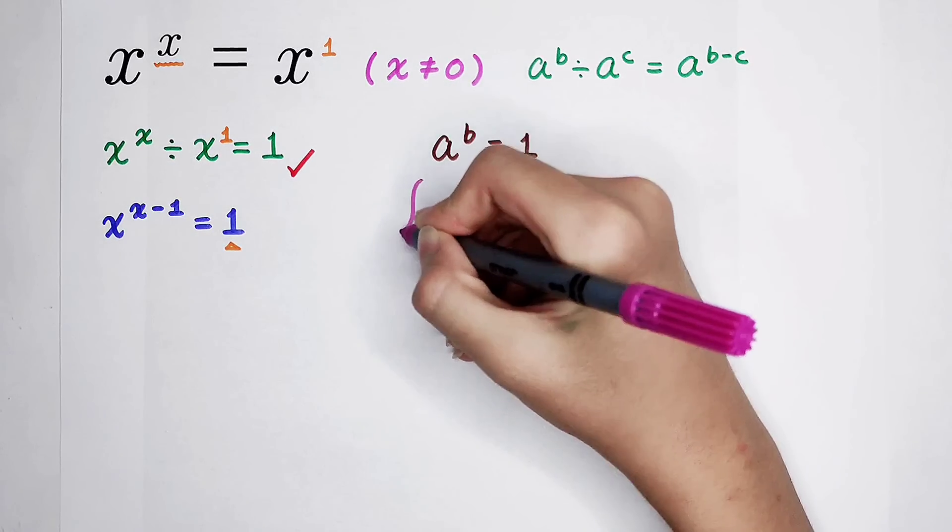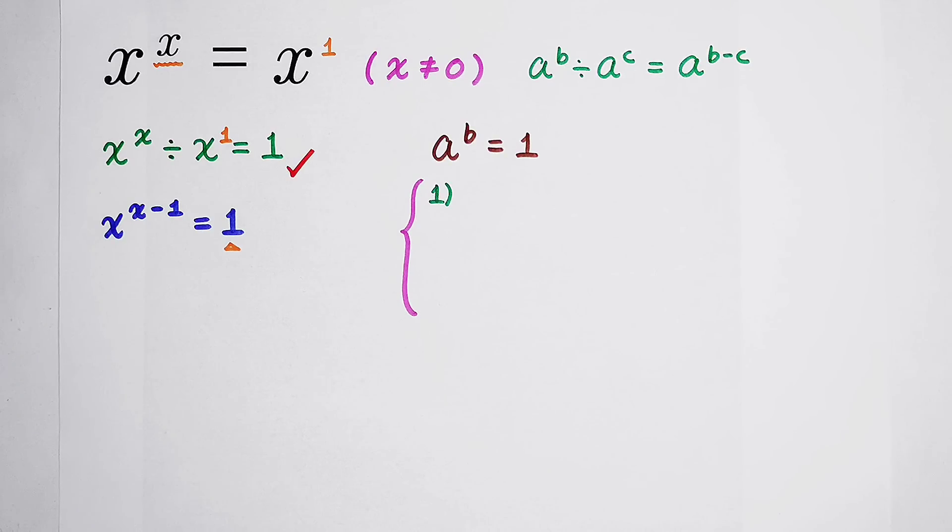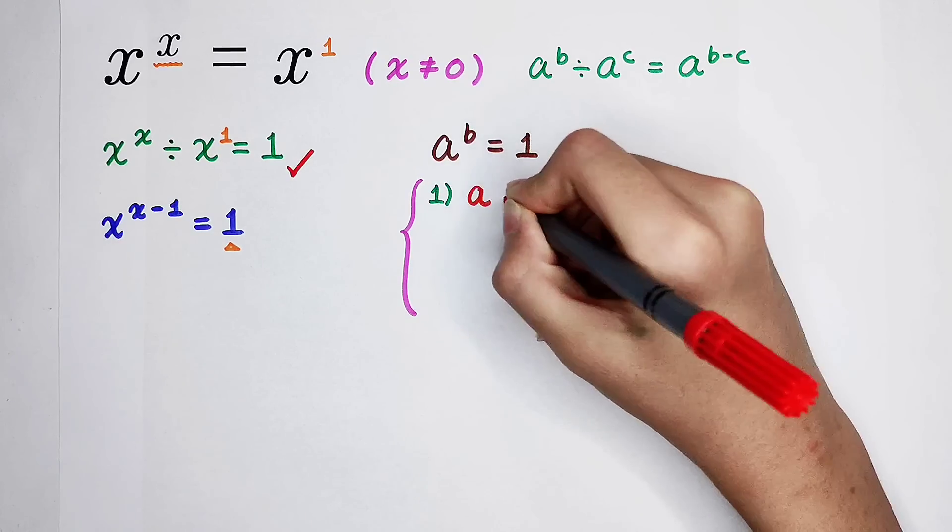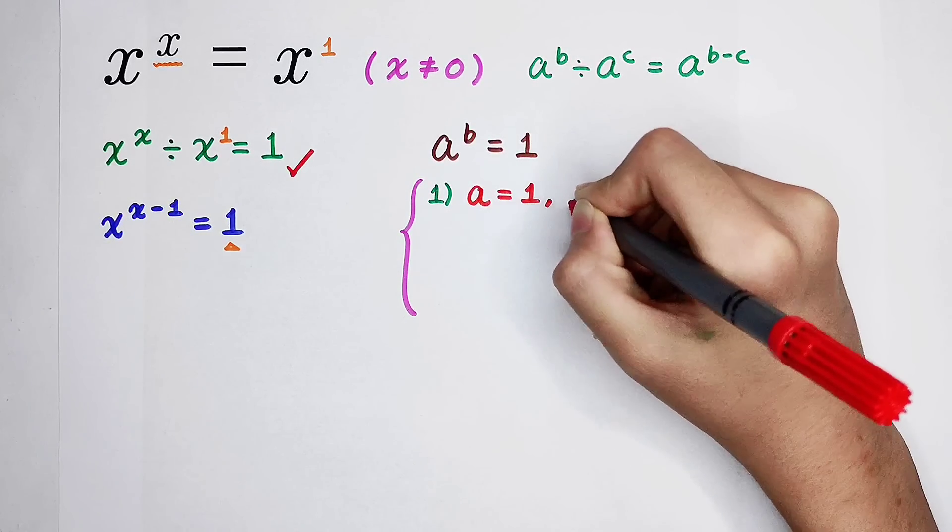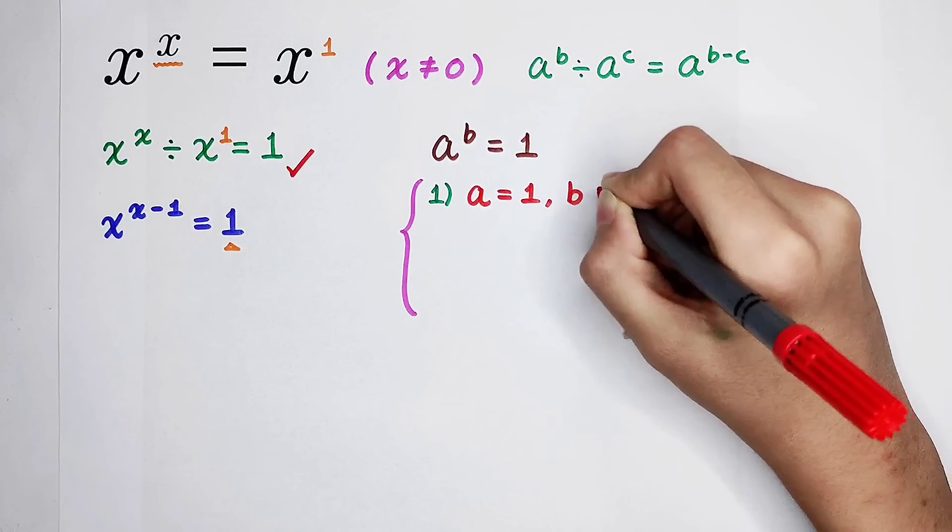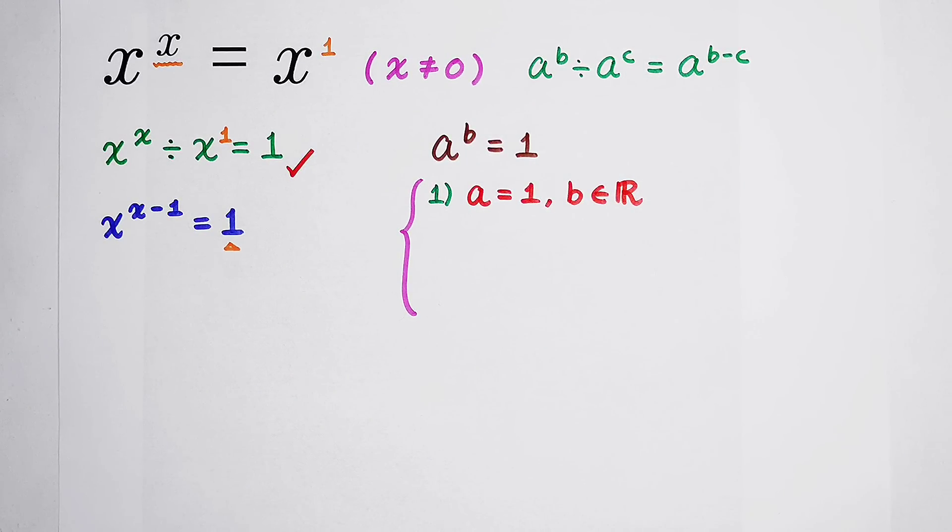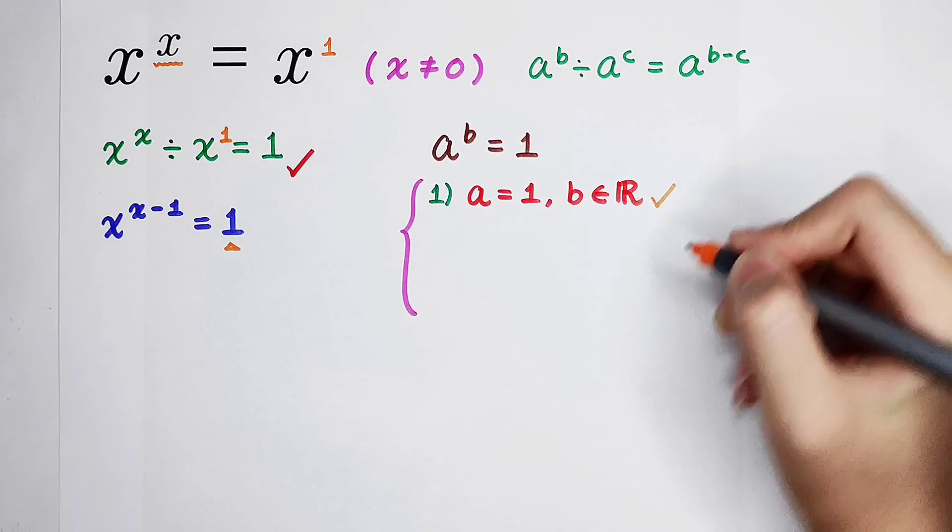Of course, there are many cases. For the first case, if a is equal to 1, then b can be any real number. And it is done.